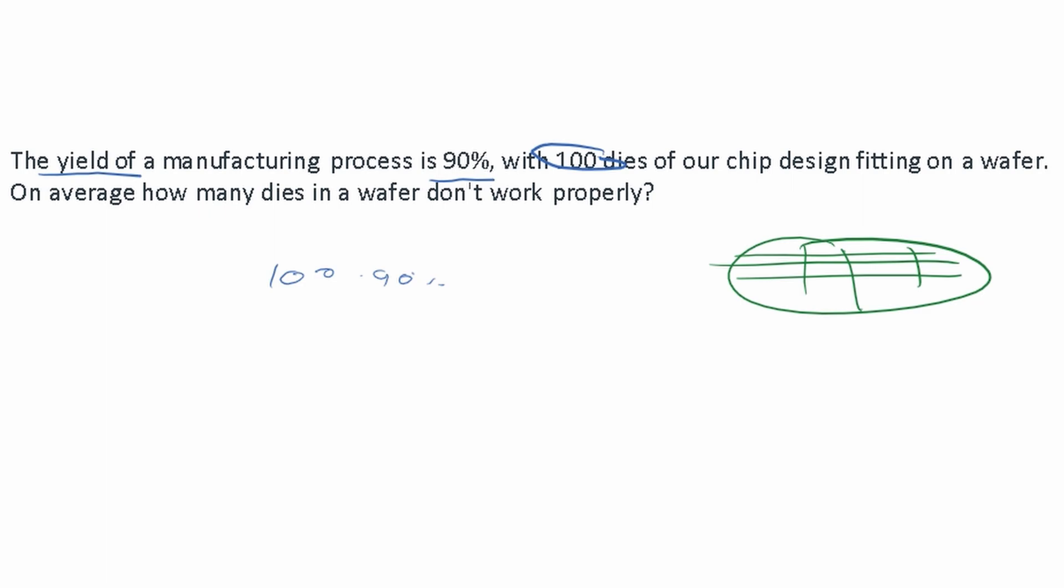Right? So 90 work - that's the yield. But how many don't work? Well, that's going to be the other 10, right? Because 100 minus 90 is going to give us 10.